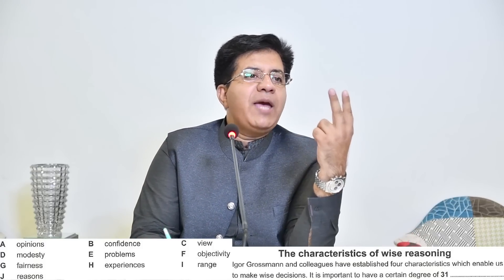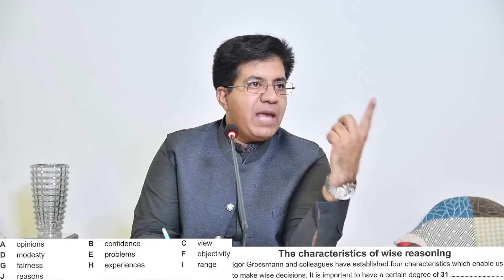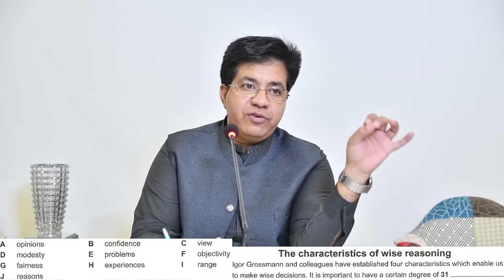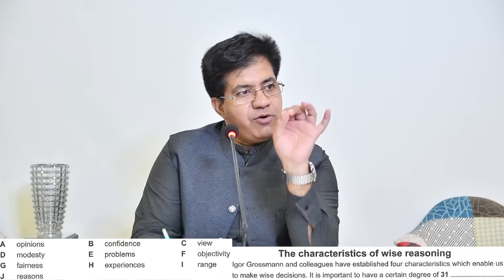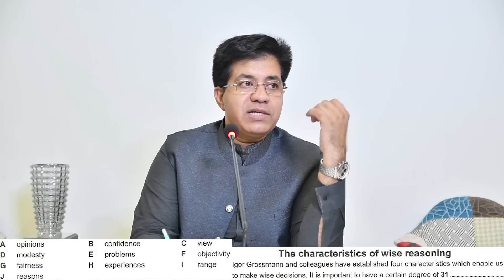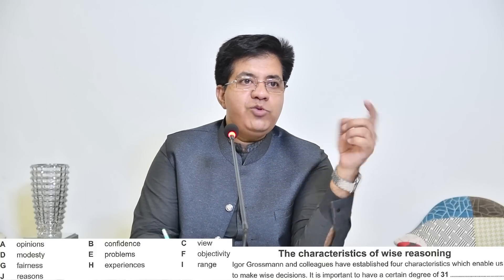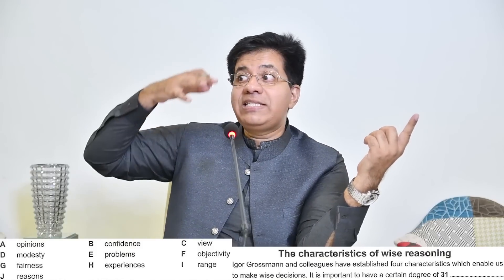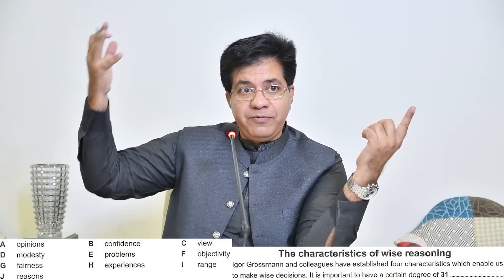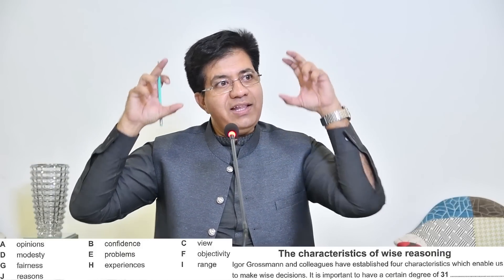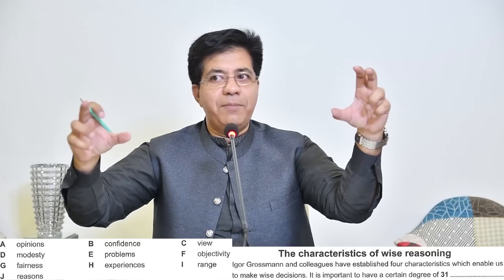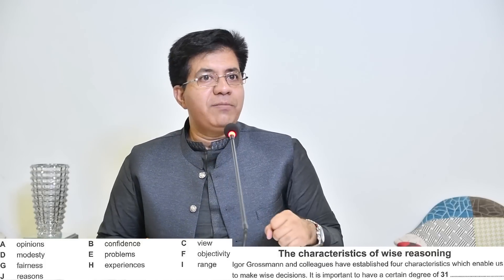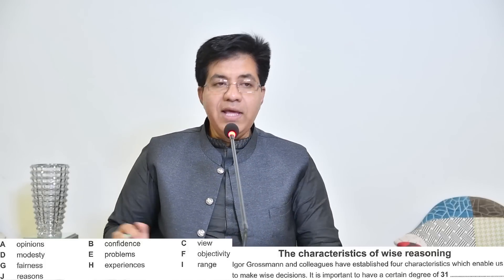We have two types of summary completion. Type 1: there is a summary and you have to select the word directly from the passage and write it there. Type 2: there is a summary, you have to find a word in the passage, then find the synonym of that word from a box of words, and then write it — double the trouble. But don't worry, I'll tell you how to do it.